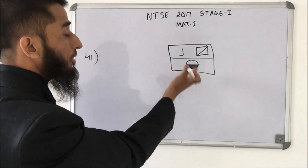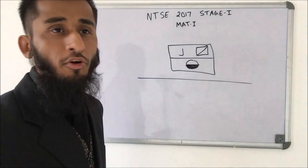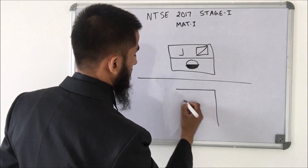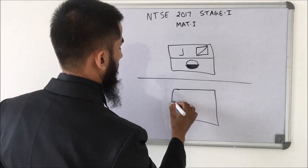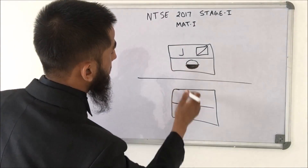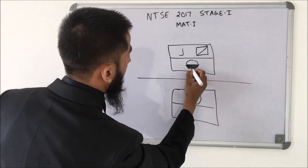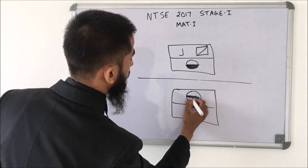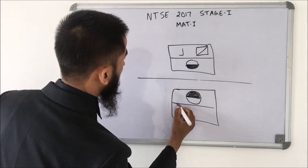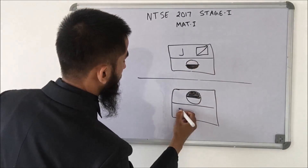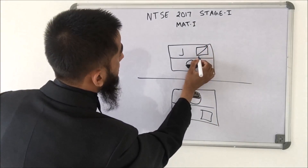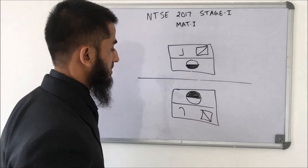Here we find the water (border) image of the given figure. To create the water image, draw the original line and flip it. The first element is a circle — dark on top — so in the water image, dark will be below. Then the J becomes its mirror equivalent, followed by a square with its diagonal flipped. This is the correct answer.